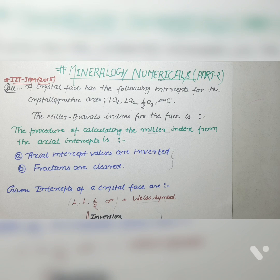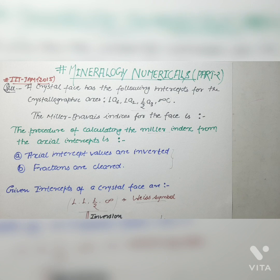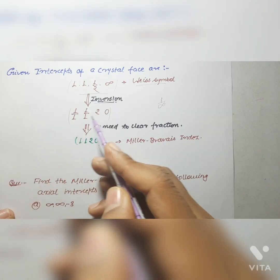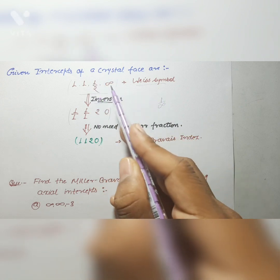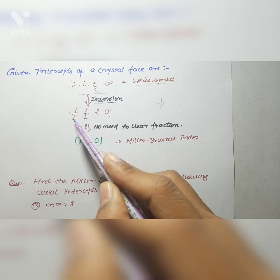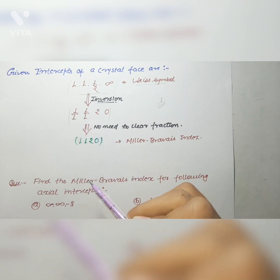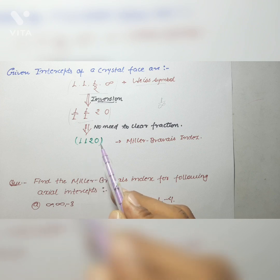In the given question, the axial intercepts of a crystal face are 1, 1, 1/2, and infinite. To convert the Weiss symbol into Miller indices, the first step is inversion. Inverting these numbers gives 1, 1, 2, and 0 — by inverting 1/2 you get 2, and by inverting infinity you get 1/infinity which equals 0. Since there is nothing remaining in fractions, no need to clear the fraction. So the Miller-Bravais indices for the given axial intercepts are 1, 1, 2, 0, which is the correct answer.